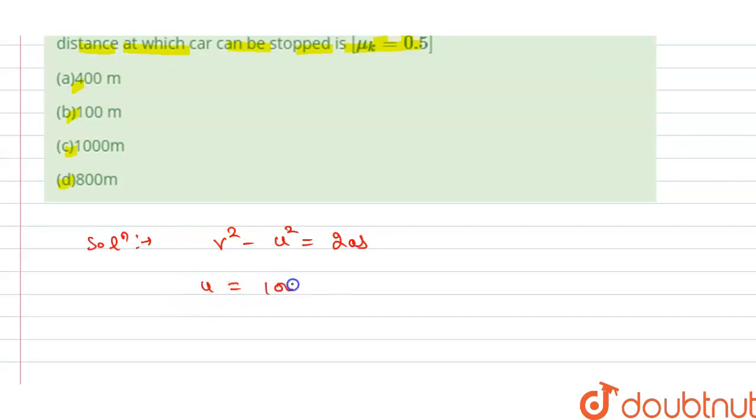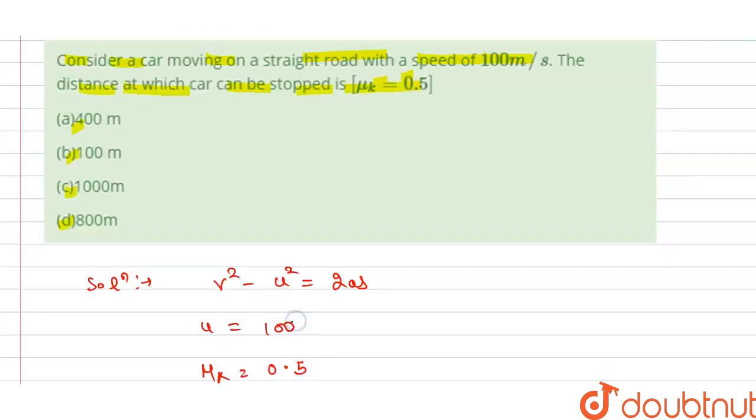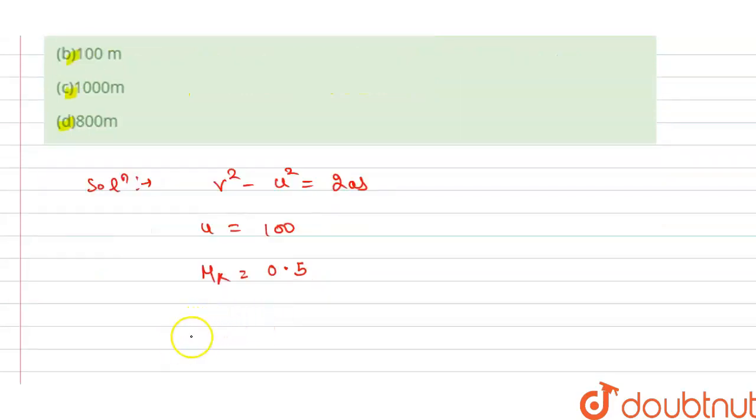u is given to us, initial velocity is 100, and mu_k, the coefficient of kinetic friction, is given to us as 0.5. And we have 2as equals to...